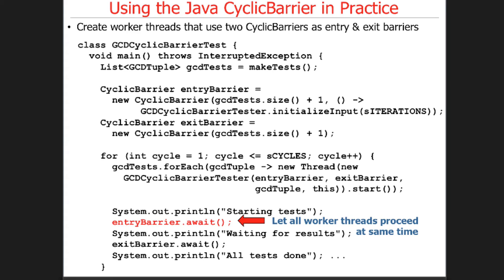Say we have four GCD implementations we want to test — so that's four threads, one for each. We also want to account for the main thread, so now we have five threads total. The way await works is it will wait until all n threads call await. So we have to count ourselves because we're a waiter also — we're waiting here for all four threads to start, and we are the fifth. When they all call await, they can all start to run. When the main thread starts to run, it immediately turns around and waits for everything to finish. We need to count the waiting thread in our count because otherwise we can't wait for everybody to start at the same time.